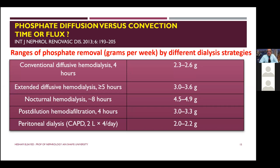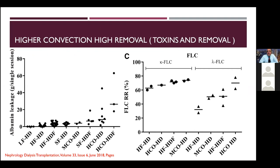With higher convection and higher toxin removal, you can achieve removal of kappa and lambda free light chains at around 45,000 daltons using hemodiafiltration, medium cut-off, or high cut-off hemodialysis. However, never combine hemodiafiltration with medium cut-off or high cut-off membranes, because albumin loss would exceed 7–10 grams, or even more than 20 grams with high cut-off membranes.